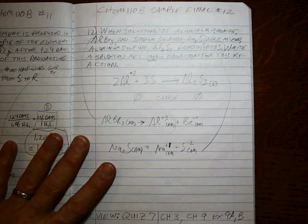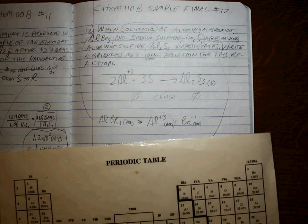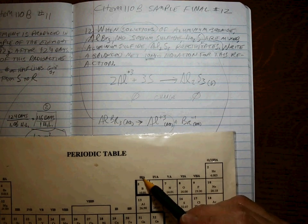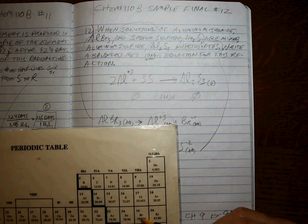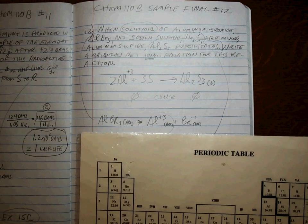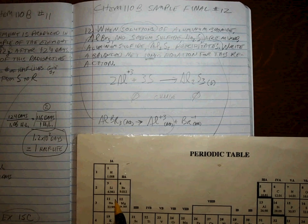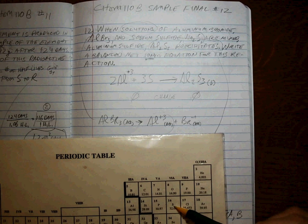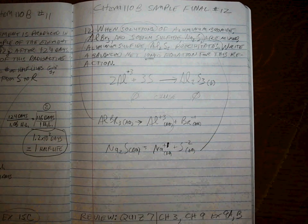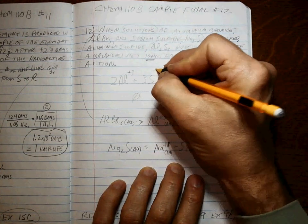And if you weren't sure about any of those charges, you should be able to tell from the periodic table. Aluminum, group 3A, three electrons get lost. Bromine, 7A, one electron gets added. Sodium, group 1A, one electron gets lost. Sulfur, 6A, two electrons get added. So the sulfur exists as a minus 2 charge.